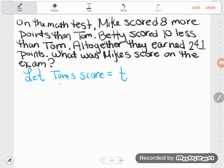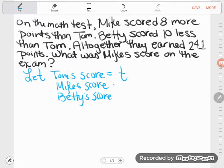Now, we don't only have Tom's score that we're talking about. We also have Mike's score. And we have Betty's score. I would like to write an expression for each one of these. And we are going to use that T to do it.